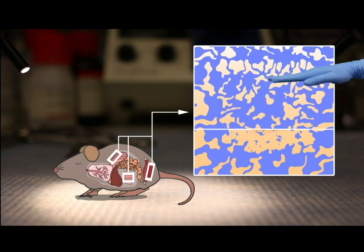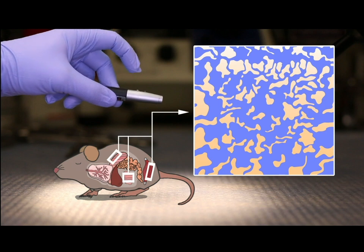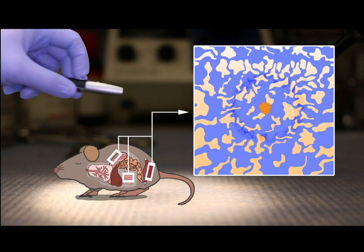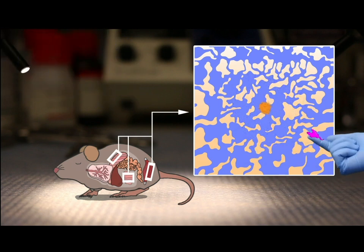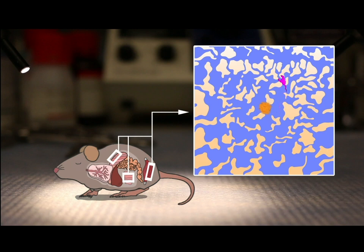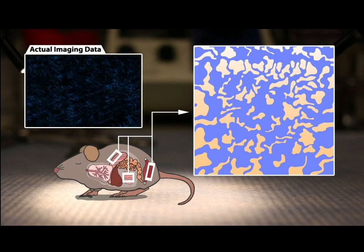To see if very limited tissue damage would lead to the same inflammatory response, we downscaled the laser injury to just a single cell. At first, neutrophils were still recruited in response to the injury, but instead of directly targeting the damage, they kept wandering through the tissue without inducing actual inflammation.